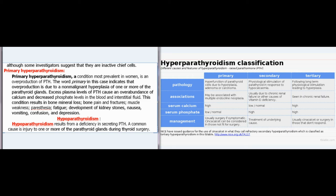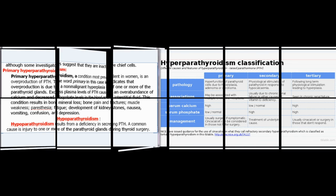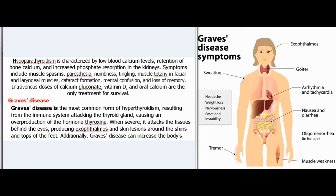Hypoparathyroidism results from a deficiency in secreting PTH. A common cause is injury to one or more of the parathyroid glands during thyroid surgery. It is characterized by low blood calcium levels, retention of bone calcium, and increased phosphate resorption in the kidneys. Symptoms include muscle spasms, paresthesia, numbness, tingling, muscle tetany in facial and laryngeal muscles, cataract formation, mental confusion, and loss of memory. Intravenous doses of calcium gluconate, vitamin D, and oral calcium are the only treatment for survival.